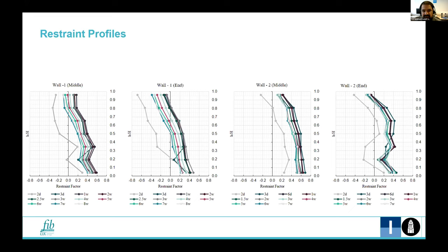Here we can see the restraint profiles obtained using this methodology for different parts of the wall. The left two graphs are for the first test at the middle and end regions. You can see that the restraint is maximum at the bottom and it decreases gradually along the height of the wall, reaching a value of zero at somewhere along the height.